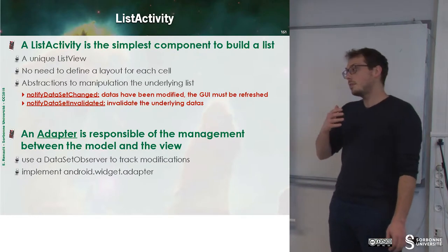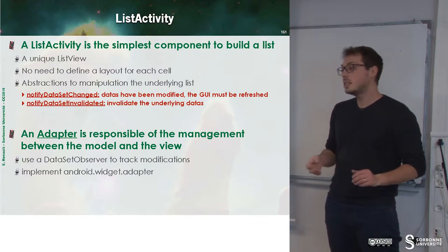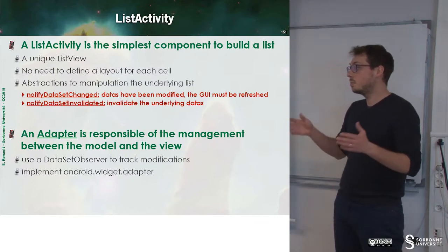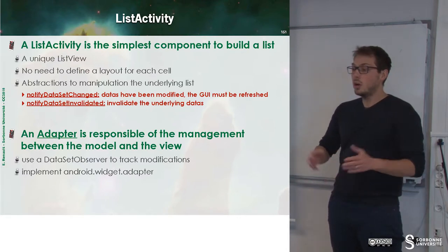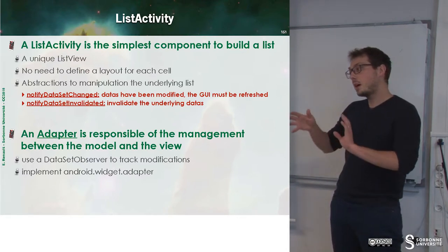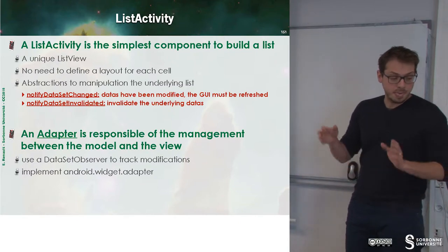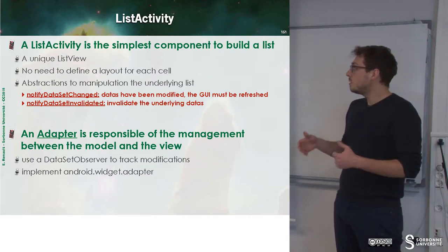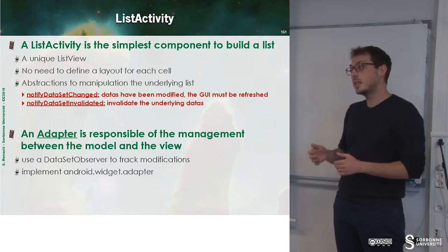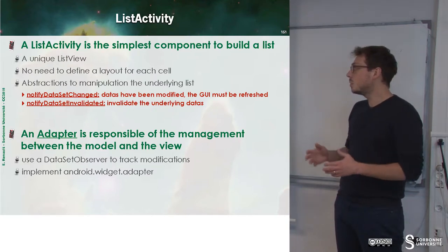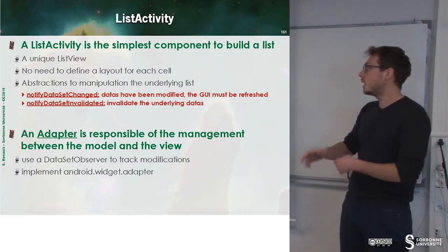We have a lot of components to manage lists. The first one is ListActivity. ListActivity is an activity that embeds a list, so all the methods are provided to use transparent lists. For instance, you don't need to define a layout for each cell — there are already provided layouts. We don't need to define our own list view; it's already embedded in the activity.